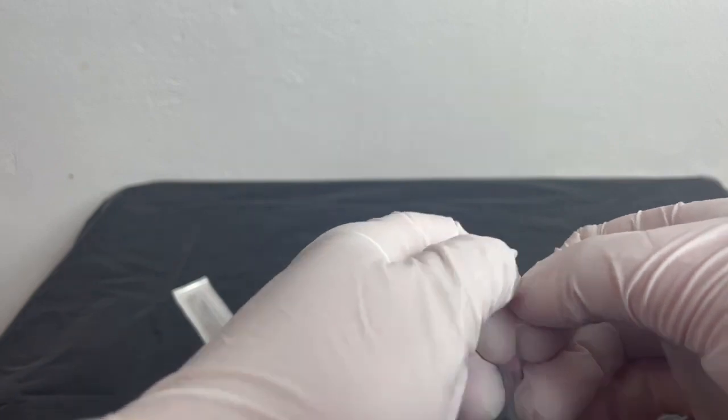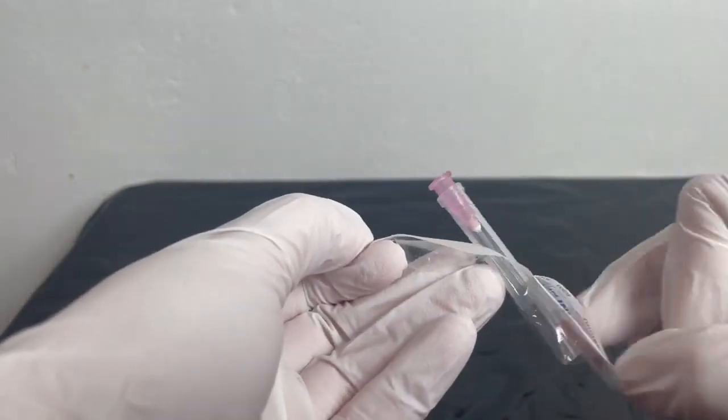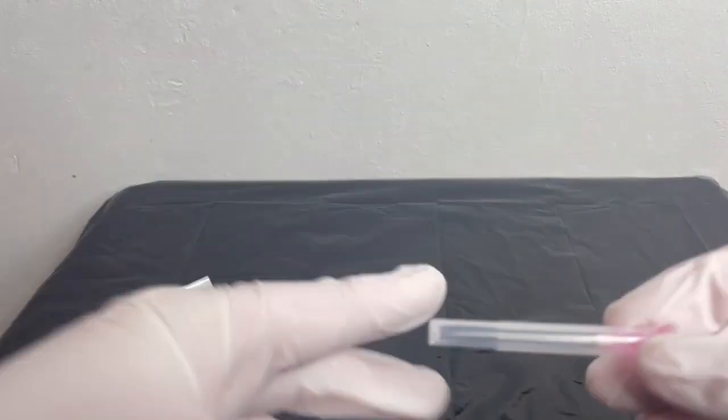So most needles will come with a little pull tab like this. So you grab each side equally, pull it open to expose the needle underneath. You can then dispose of this. You don't actually need it. It's in the bin.